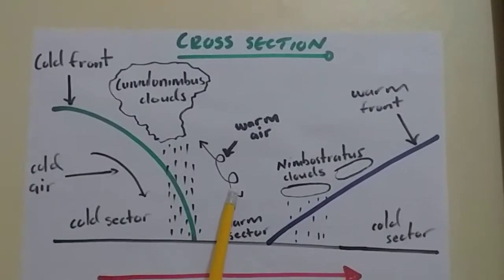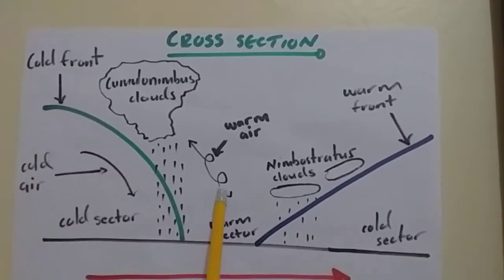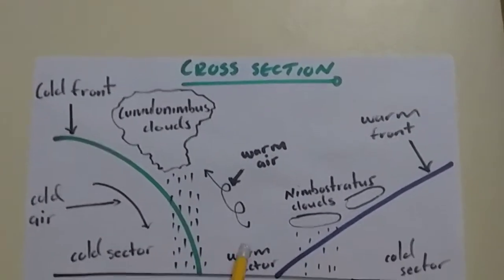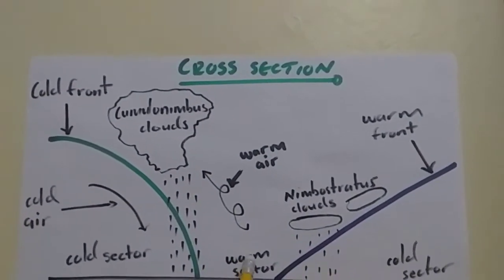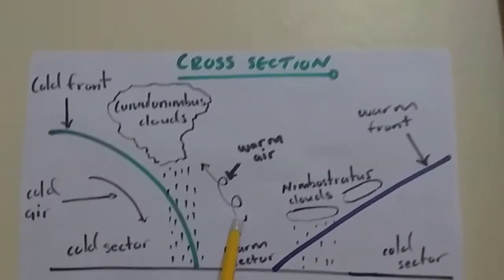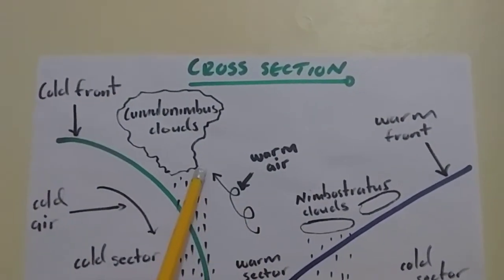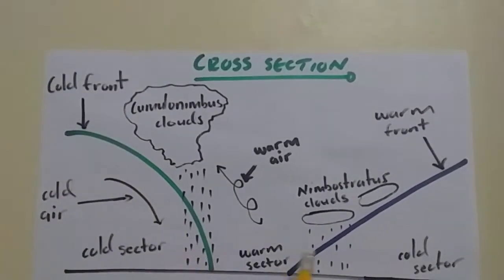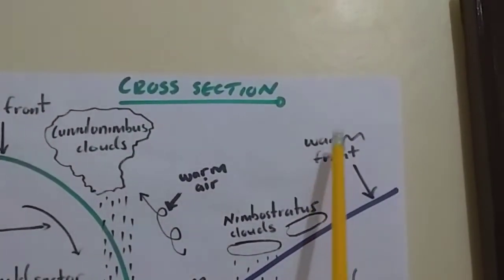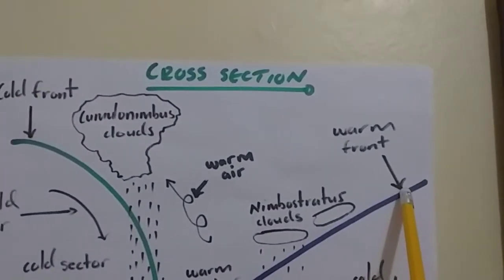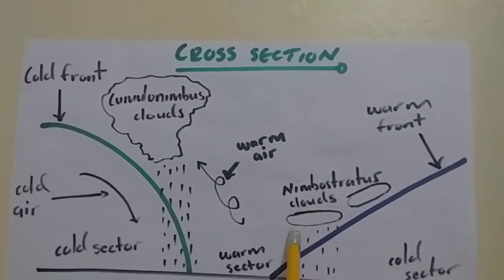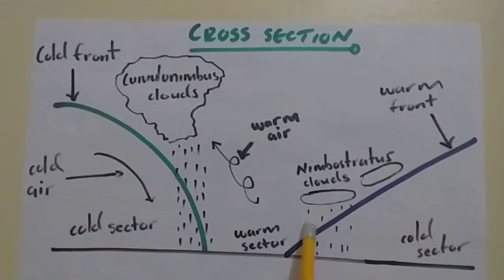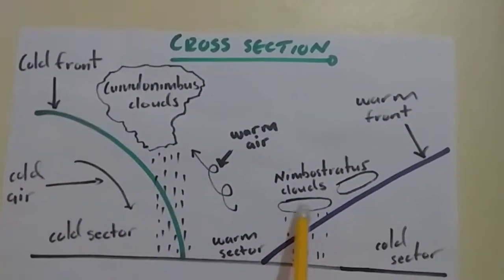And then, ahead of the cold front, we have this air that is going up, which is warm air as labeled because it's in this warm sector. Warm air is less dense and therefore, rises, right, to condense to form this heavy rainfall. And then, on the warm front there, which is labeled up here, warm front, we have the small clouds, the nimbostratus clouds, which yield light rainfall.